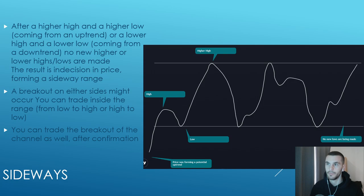A breakout on either side might occur and you can trade inside the range. As I said, 80% of the time price is going to be range bound, so you have to trade the range. This is the easiest money you can make in trading. You can also trade the breakout of the channel after confirmation.